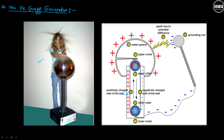One side of the belt is positively charged. When this roller rotates, this charge will go and get accumulated on this roller. There is also a conductive wire or conductive material that is connected to this comb.